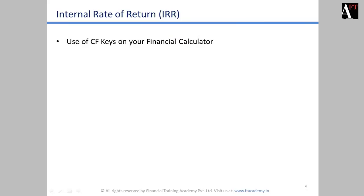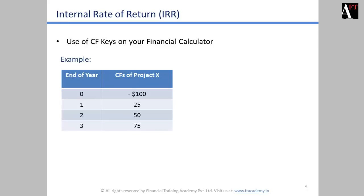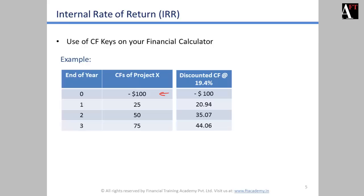We will use the CF keys on our calculator to calculate IRR. For this example the project cash flows are: minus $100 at year 0, $25 at the end of year 1, $50 at the end of year 2, and $75 at the end of year 3. The initial investment is $100 and the positive cash flows occur at the end of years 1, 2, and 3. Remember, for these calculations the cash flows need to occur at equal periods of time. When we discount these cash flows at a 19.4% rate, the present values total up to zero.